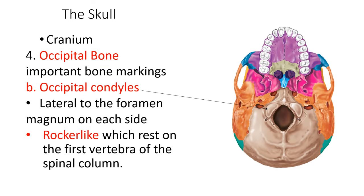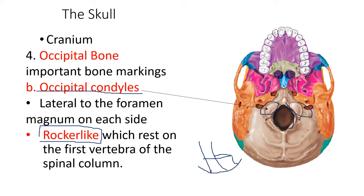Another important bone marking in the occipital bone is the occipital condyles, located lateral to the foramen magnum. The description is that they are rocker-like — like a rocking chair. They rest on the first vertebra of the spinal column, allowing the head to move.